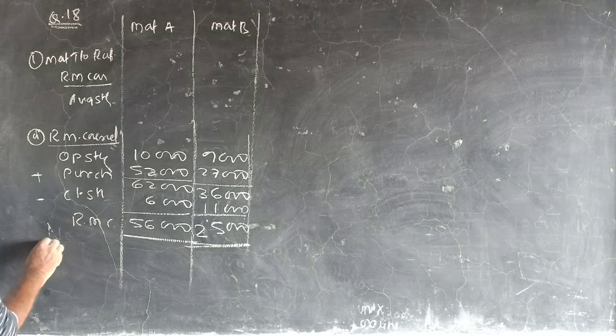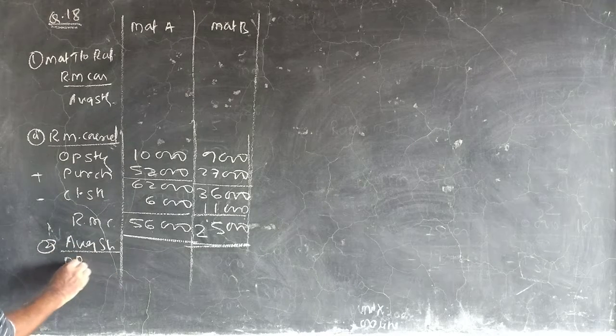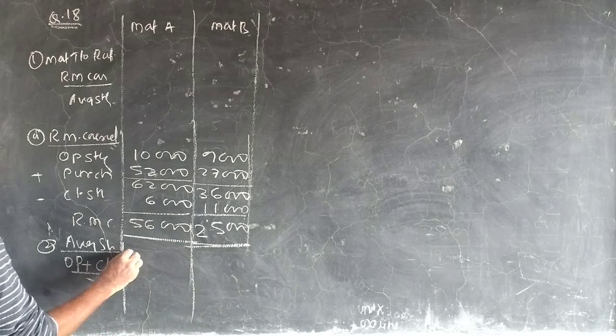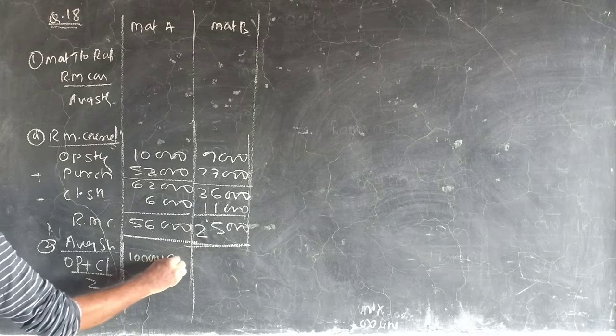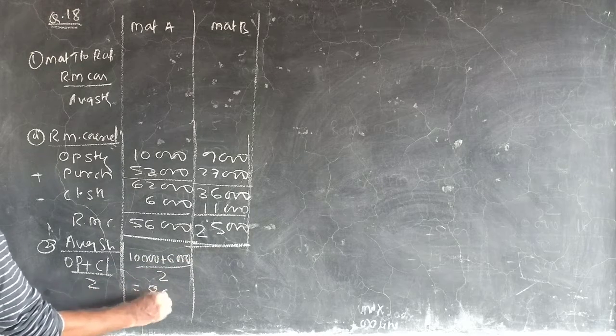The average stock. Average stock: opening plus closing divided by 2. Opening plus closing divided by 2.